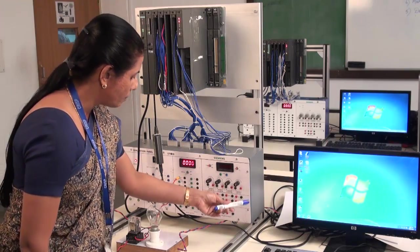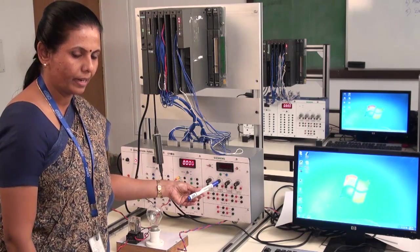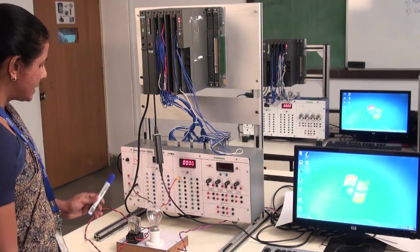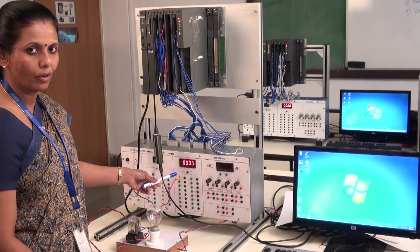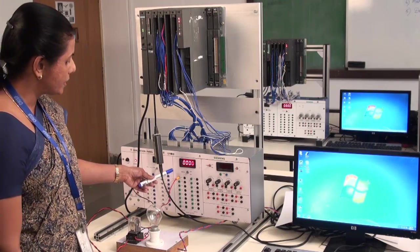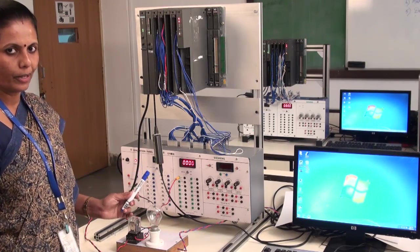Then this particular portion is for analog input and output connection. A simple lamp node is connected here, two outputs, first channel output of our digital output card. The address for this output is Q4.0.